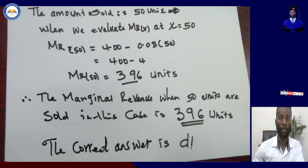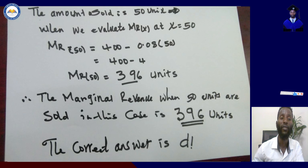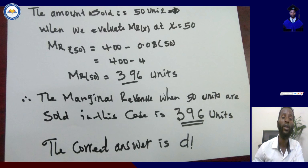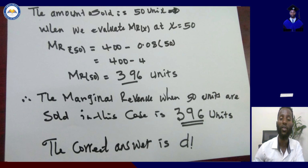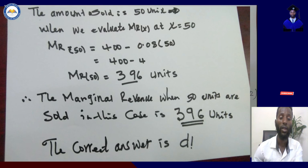We evaluate this marginal revenue equation at x equals 50, since 50 is the number of units sold. MR(50) equals 400 minus 0.08 times 50. Multiplying 0.08 by 50 gives 4, so MR(50) equals 400 minus 4, which equals 396. Therefore the marginal revenue when 50 units are sold is 396 units, and the correct answer is choice D.